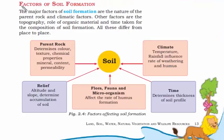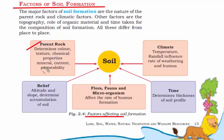Let's understand how soil is formed. There are five factors that affect soil formation. The first is the parent rock — the rocky layer at the bottom of the soil — which is responsible for the color and texture of the soil. The second factor is relief, or topography: the shape of the land. In a high altitude area or on a slope, the topography determines the accumulation of soil — on elevated land, most soil accumulates at the bottom of the hill.